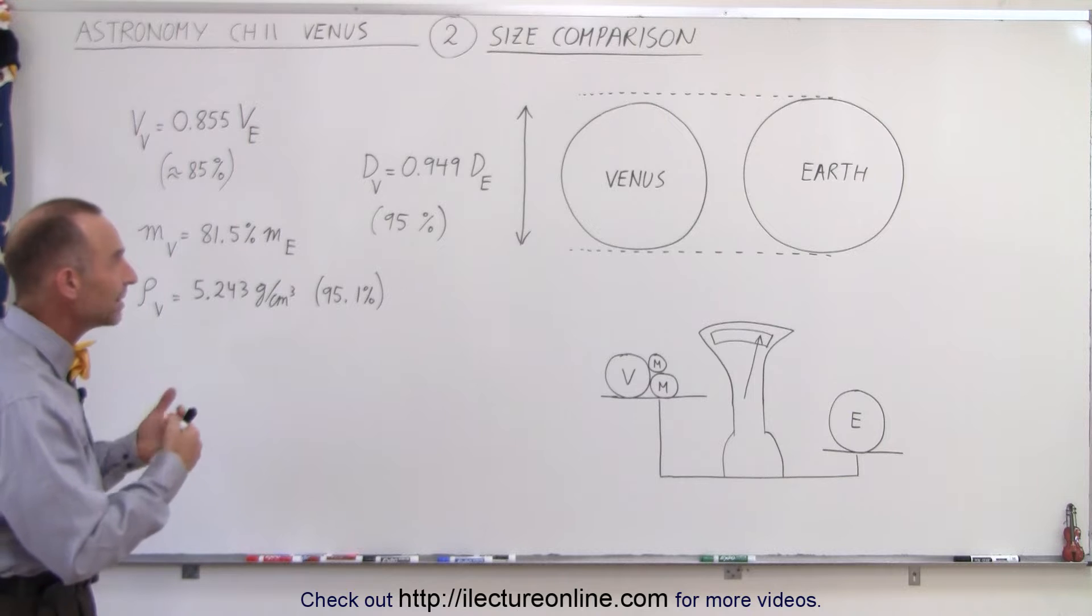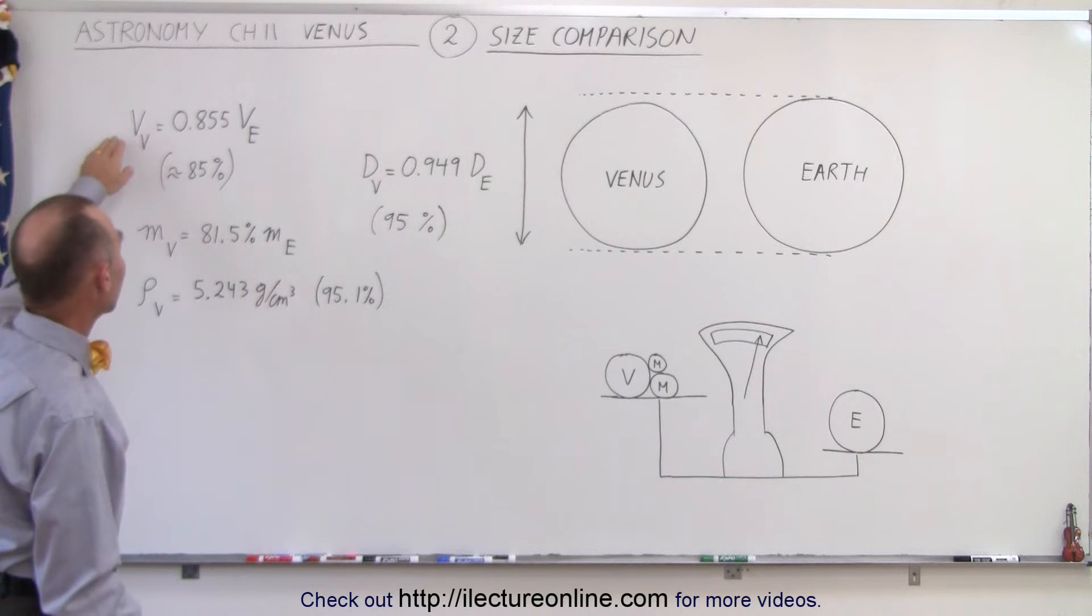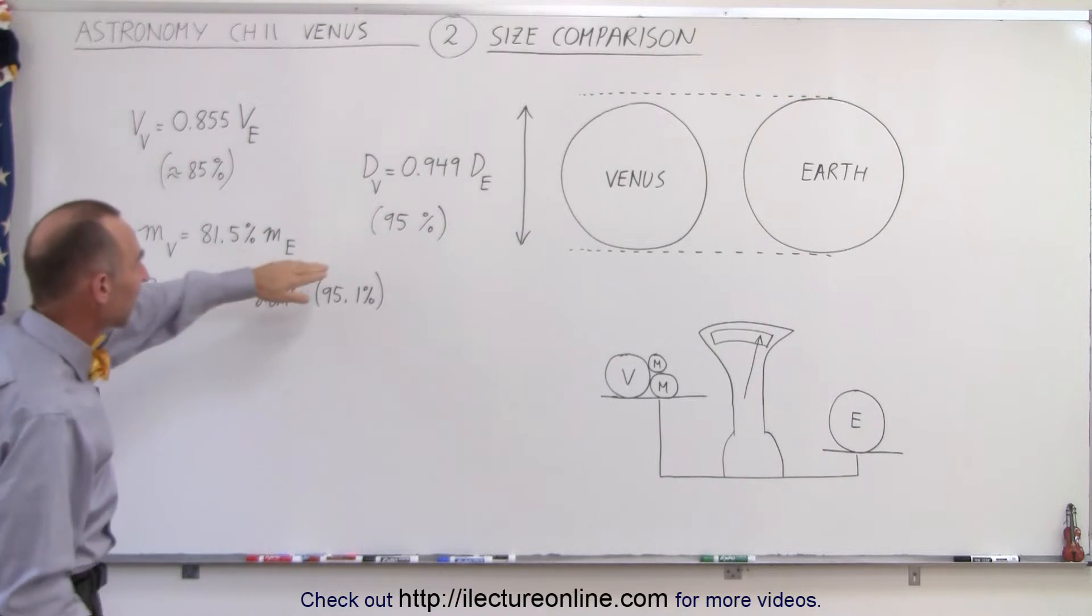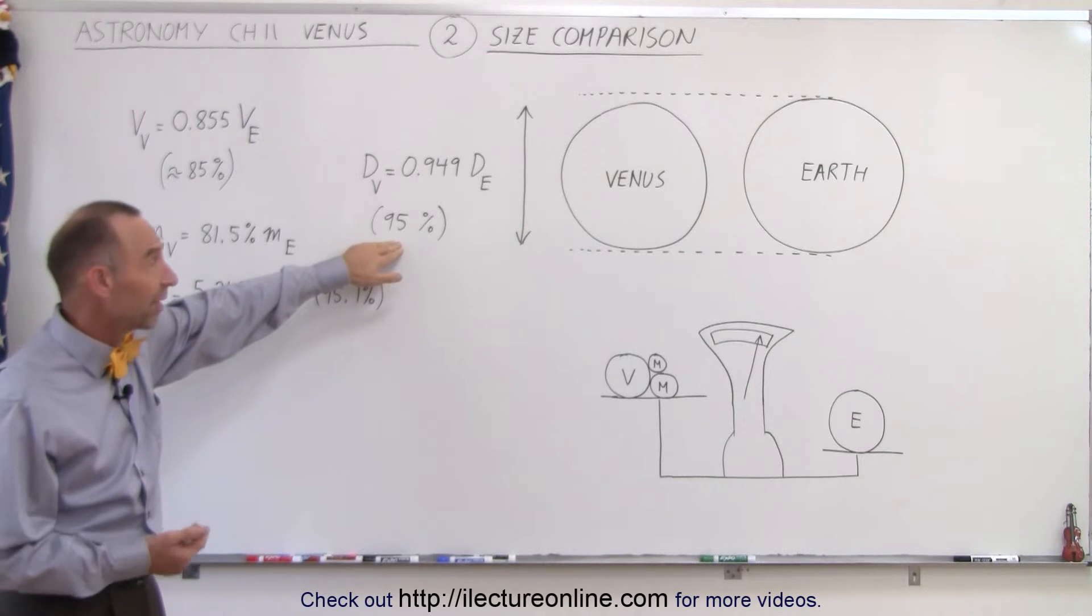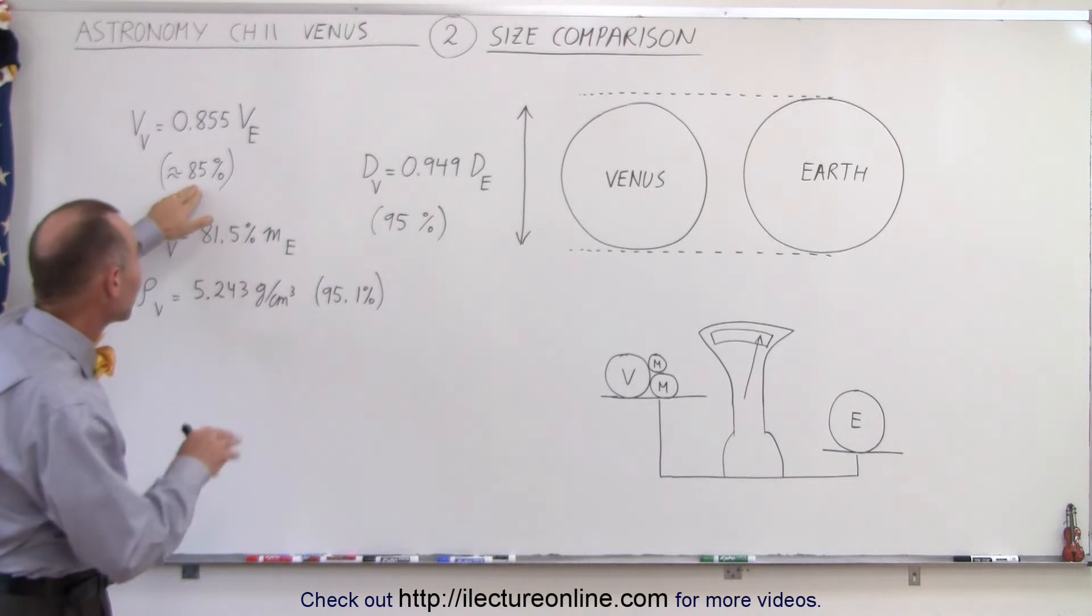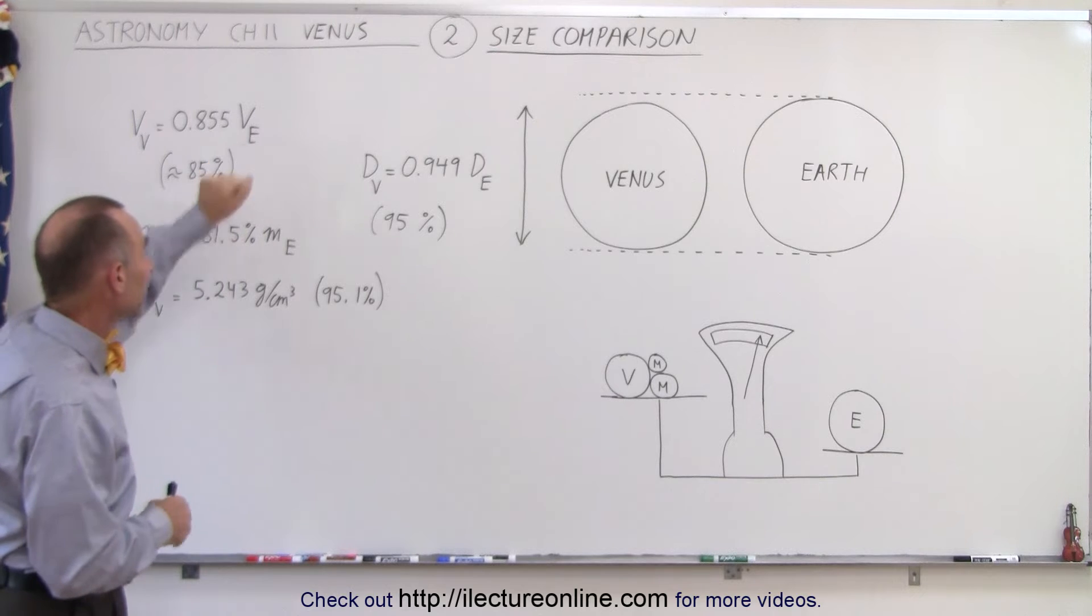Now when we take the radius and we cube it we have a relative size for the volume. So if the diameter is about 95 percent the diameter of the Earth then the volume is about 85 percent the volume of the Earth.